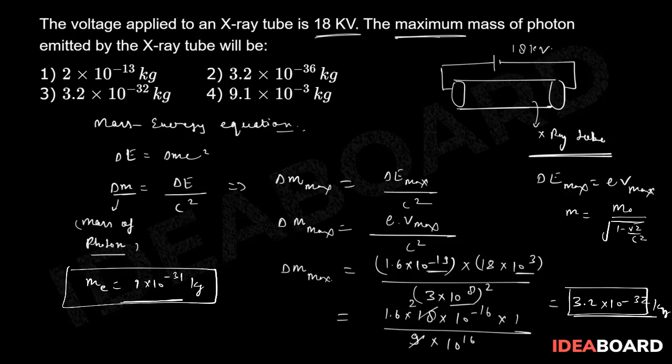In the theory of relativity, m equals m₀ divided by the square root of (1 - v²/c²). That's why we say that if a photon is not moving, it has rest mass zero. But in this question they were asking the maximum mass of the photon, which is 3.2 × 10^-32 kg. So the right choice is obviously option number three.